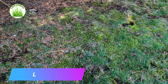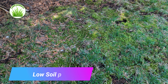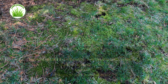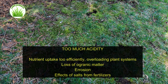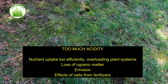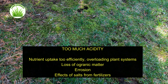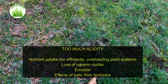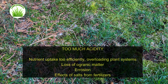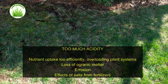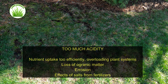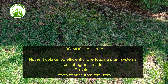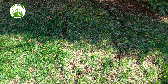What happens if soil pH is too low? Nutrients may be taken up too efficiently — the excess can't be processed fast enough, it overloads plant systems, causing them to languish and die. Another indicator of acidic soil is that it's conducive to moss. Low soil pH can also be related to loss of organic matter, erosion of the surface layer, and the effects of salts and nitrogen in sulfur fertilizers.